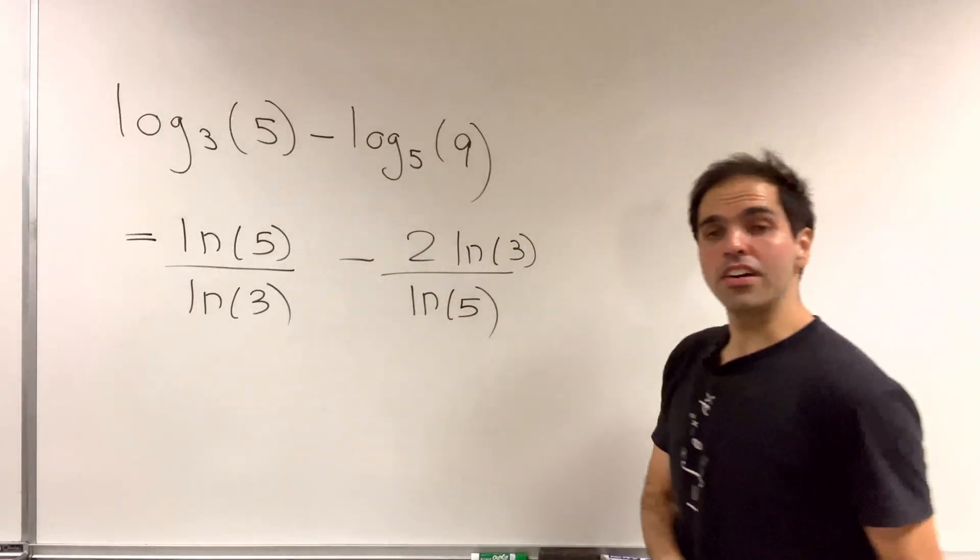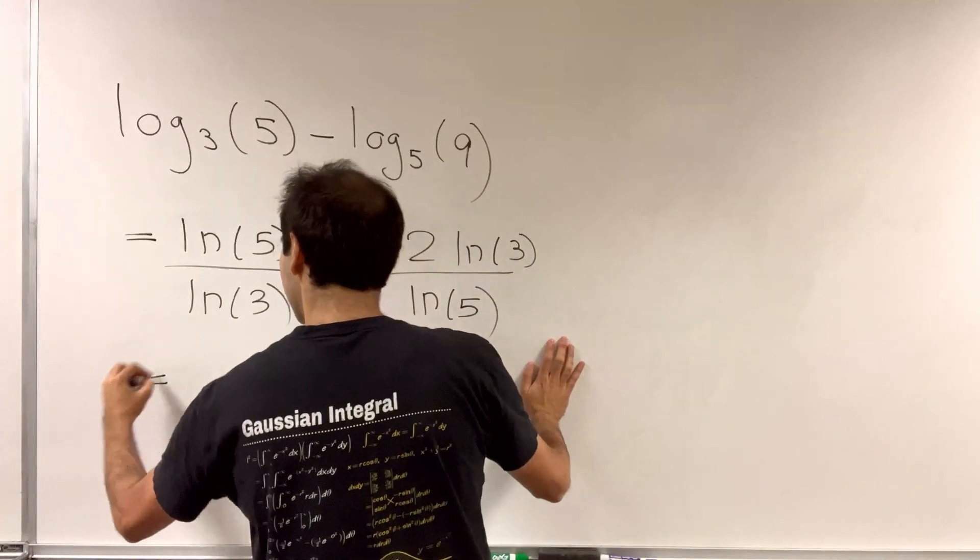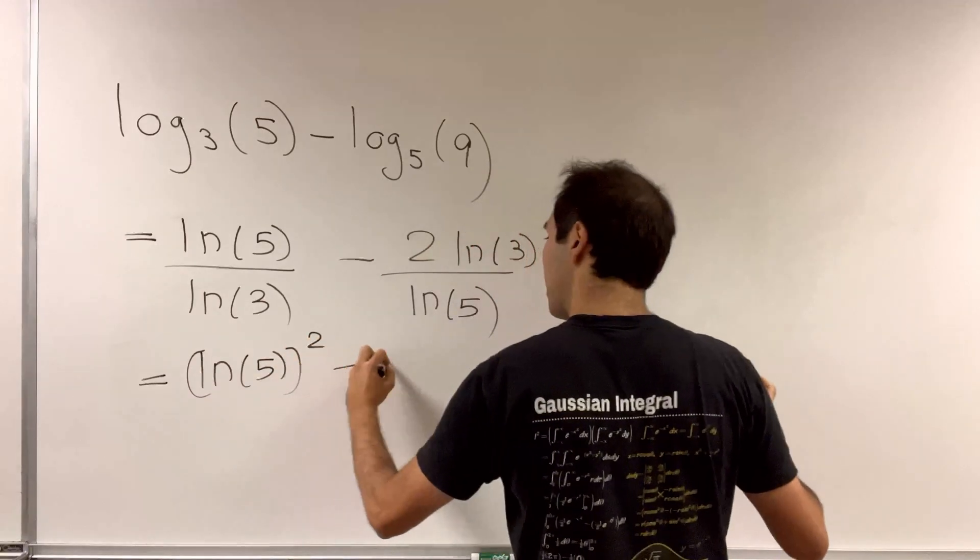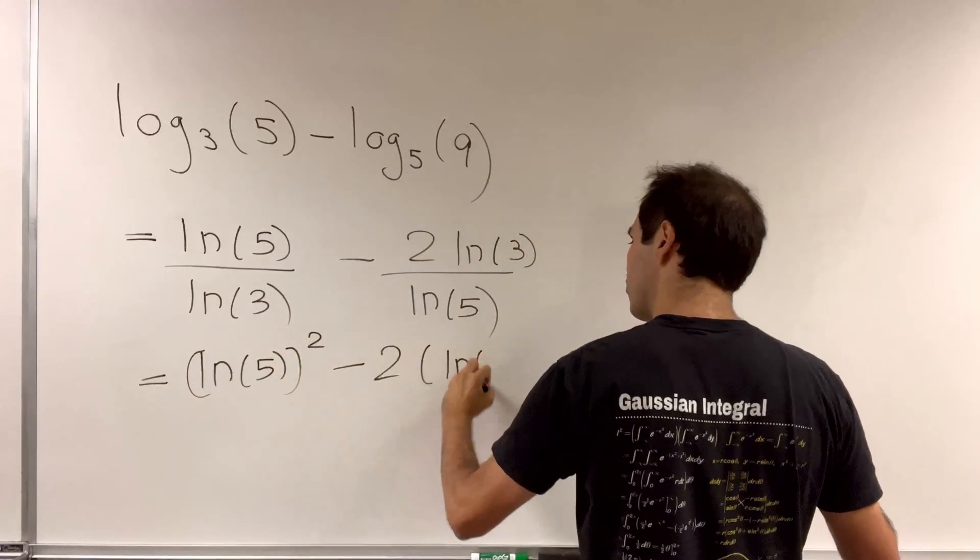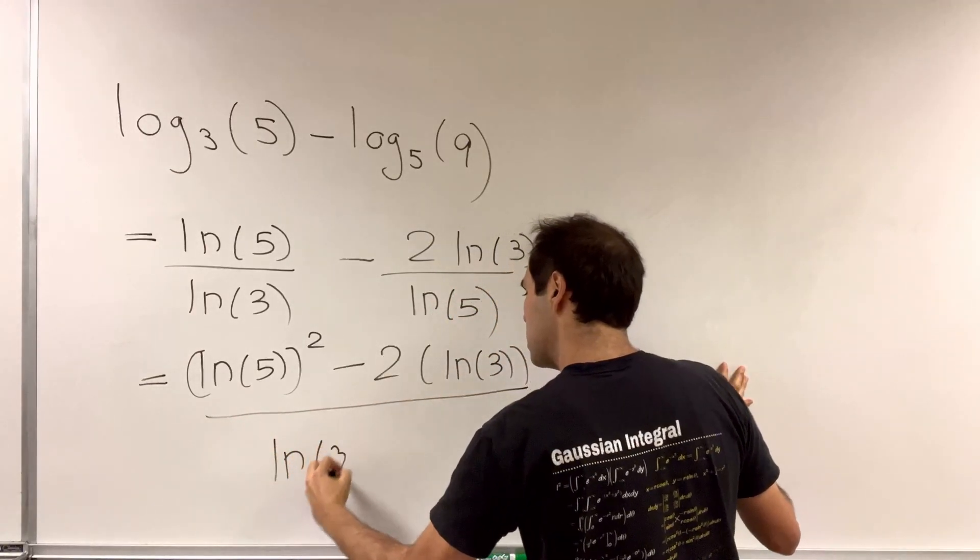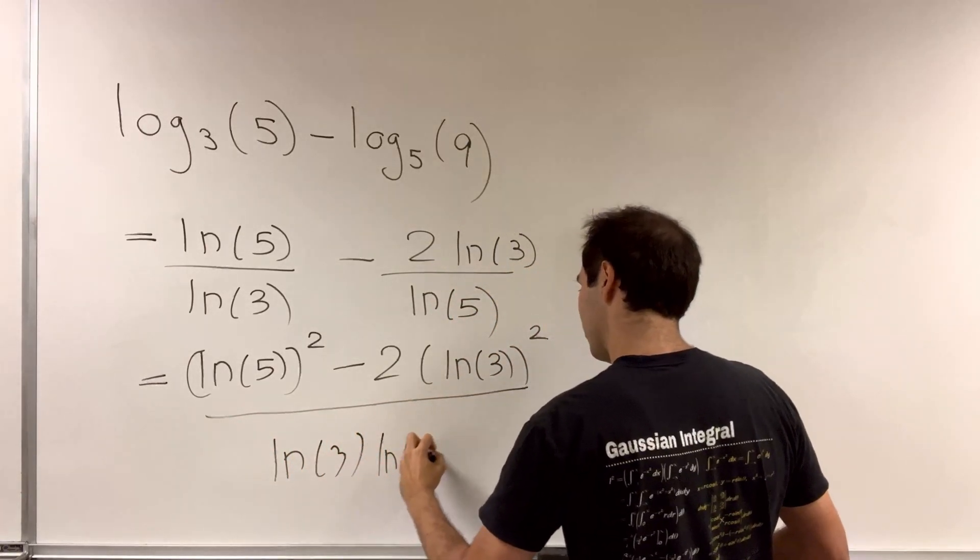And then putting this under a common denominator, we get ln of 5 squared minus 2 ln of 3 squared over ln of 3 times ln of 5.